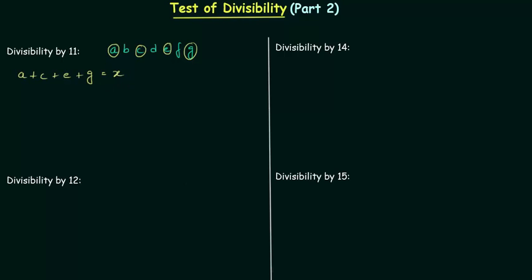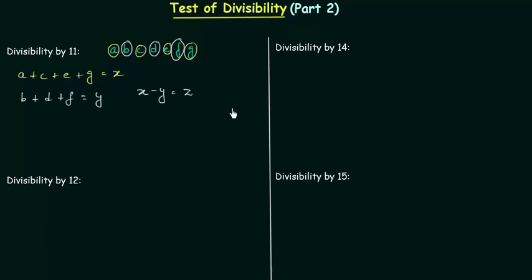Now we have to find out the sum of digits at even places. F, D, B are the digits at even places and their sum is equal to Y. Now we have to find out the difference X minus Y and let's say it is equal to Z.